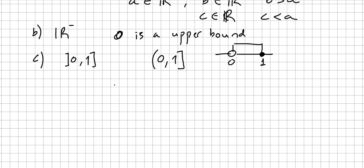Now if you have a set S, and this set S has an upper bound — let us call it U for upper — then S will have infinitely many upper bounds, because any x in the reals with x bigger than U will also be an upper bound for S. So it is better to get a proper definition.